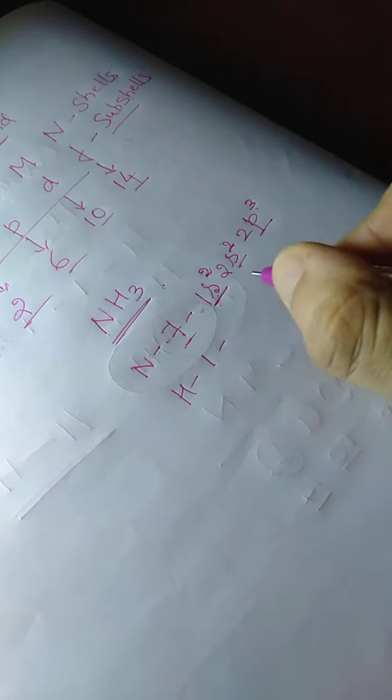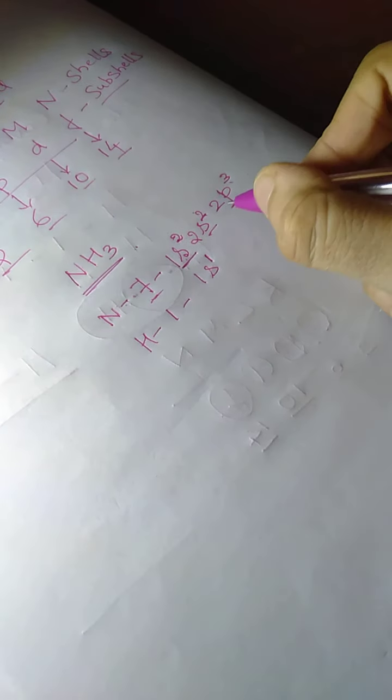Hydrogen has electronic configuration 1S1. So the P sub-shell of nitrogen requires 3 more electrons to attain stability. Let us now draw nitrogen.